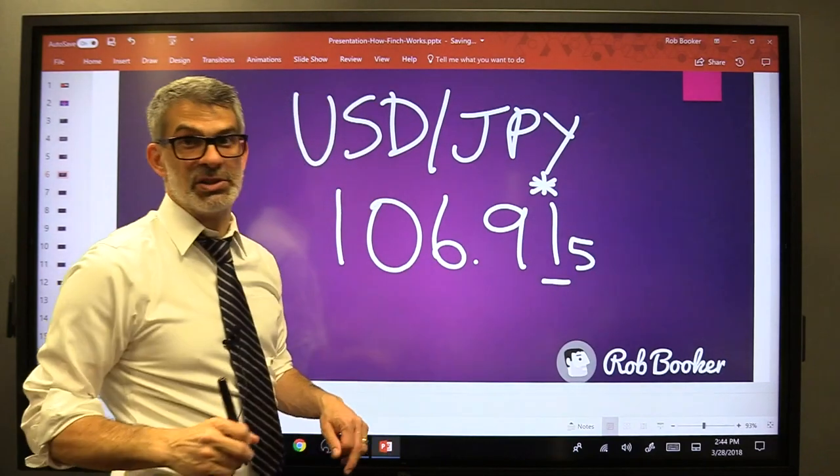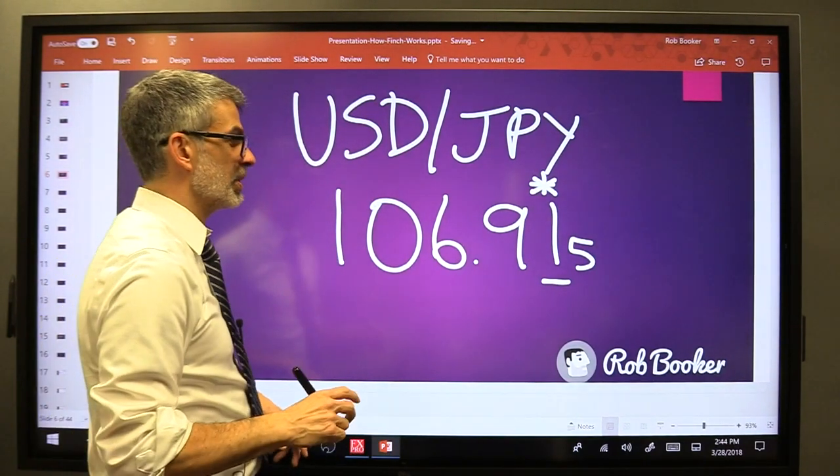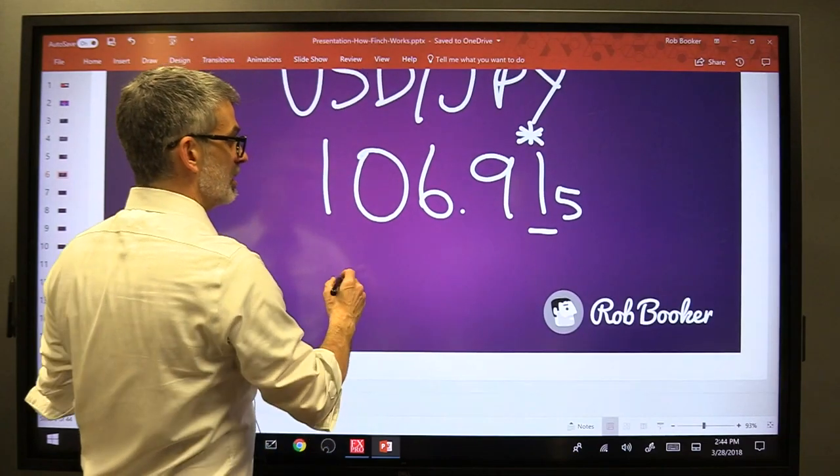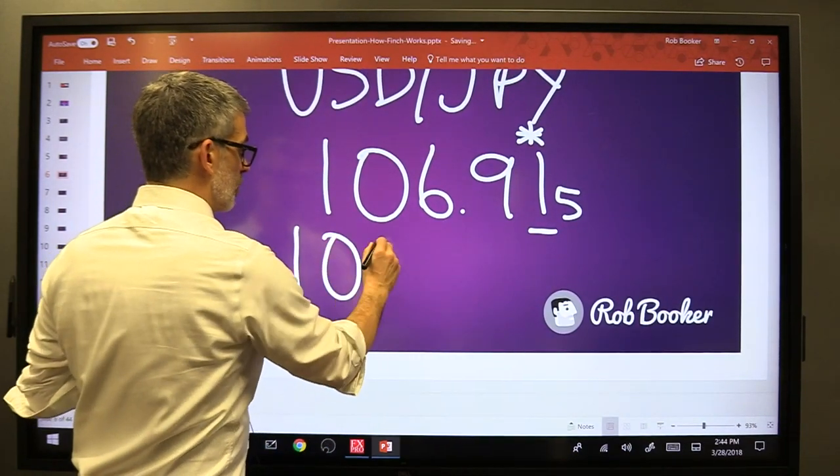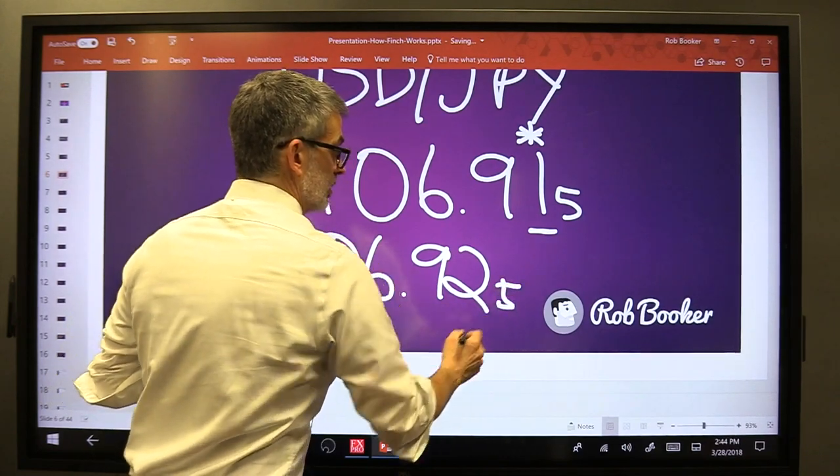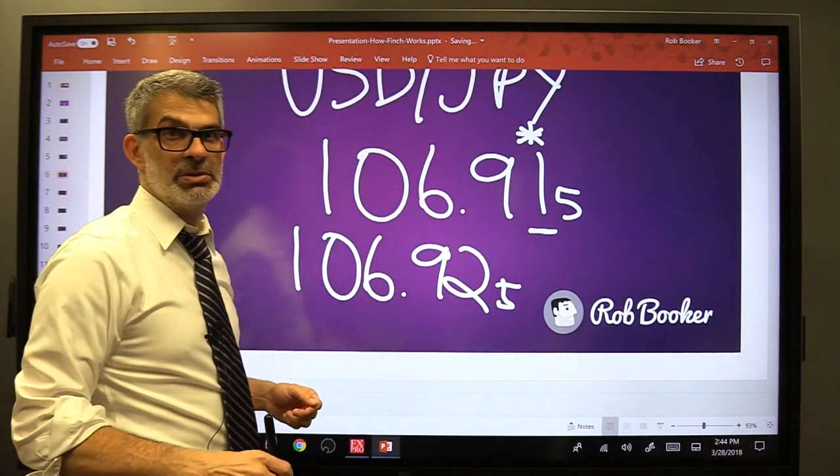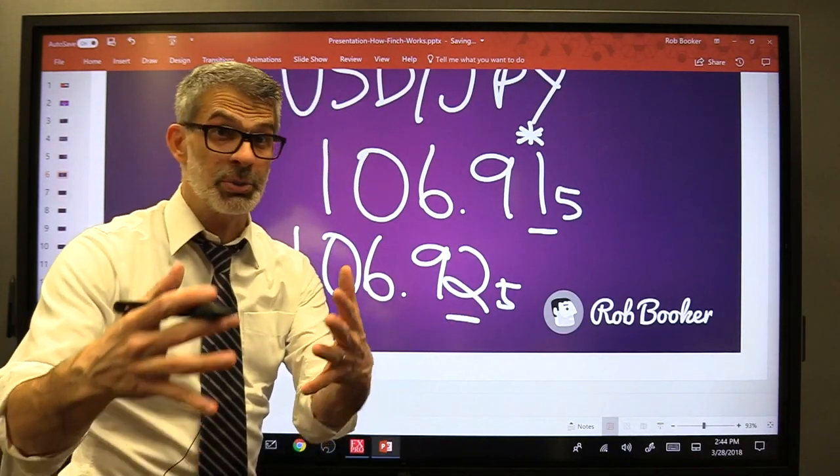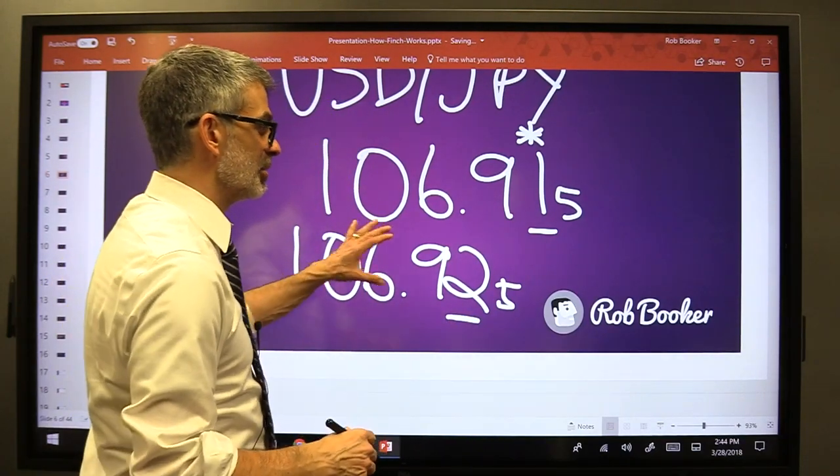And the third number after the decimal place is the pipette. So Nate, if we move from 106.91 to 106.92, how many pips have we moved up? One. So we've moved one pip up. Now what that is worth, we'll talk about in the next lesson. But this is really important.